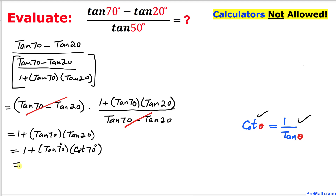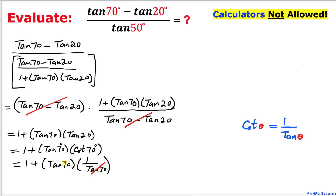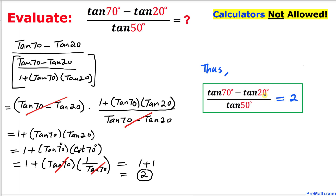Since cotangent and tangent are reciprocals of each other, we can write cotangent of 70 degrees as 1 over tangent of 70 degrees. We then have 1 plus tangent of 70 degrees times (1 over tangent of 70 degrees). The tangent of 70 degrees terms cancel out, leaving us with 1 plus 1, which equals 2. So the value of this given rational expression is 2 — that's our final answer. Thanks for watching, and please don't forget to subscribe to my channel for more exciting videos.